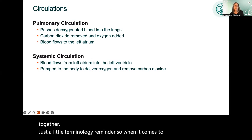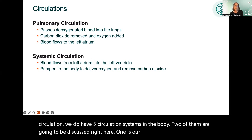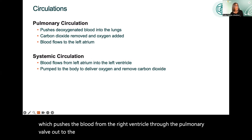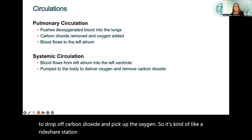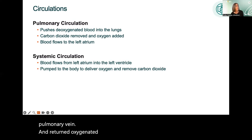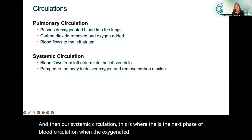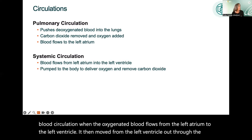When it comes to pulmonary circulation, we have five circulation systems in the body. Pulmonary circulation pushes blood from the right ventricle through the pulmonary valve out to the pulmonary artery, taking deoxygenated blood to the lungs to drop off carbon dioxide and pick up oxygen. Blood is then returned to the heart through the pulmonary vein as oxygenated blood to the left atrium. In systemic circulation, oxygenated blood flows from the left atrium to the left ventricle, then out through the aorta to the rest of the body.